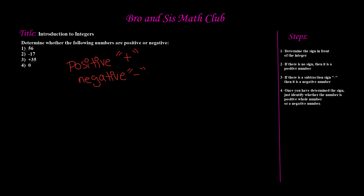Our first example is 56. As you can see, there is no sign in front of 56. But if we keep reading in our steps, step two says: if there is no sign, then it is a positive number. So we know that a positive number has to have a plus sign in front of it. We're going to go ahead and write a plus sign in front of 56. So now we know that 56 is a positive number.